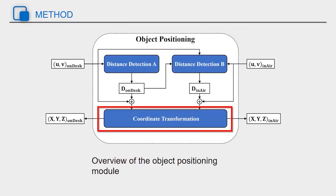After obtaining the distance of the object, the two-dimensional pixel coordinates of the object can be converted into three-dimensional coordinates by using the camera intrinsic parameters.